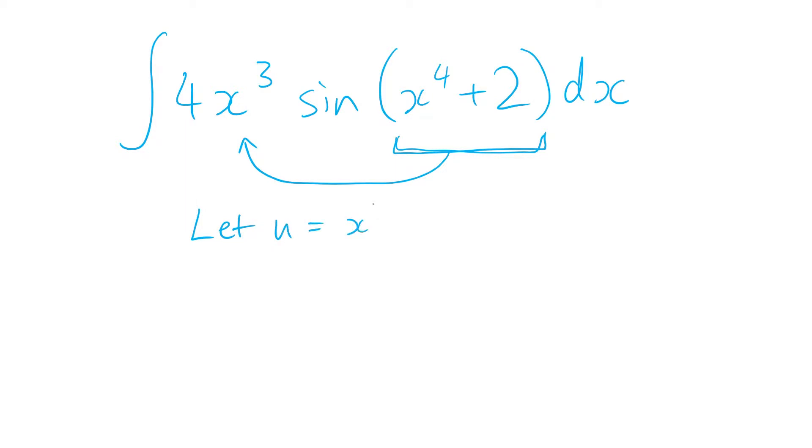So we'll let u equal x to the 4 plus 2. Now we want to take the derivative of what we just set to be u. So we'll take the derivative there and now there's two new equations that we just found.